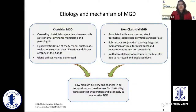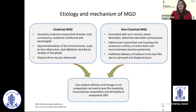Broadly, MGD could be classified into cicatricial and non-cicatricial. The causes of cicatricial MGD include trachoma, erythema multiforme, pemphigoid, and Stevens-Johnson syndrome. The basic pathology is hyperkeratinization of the terminal ducts, which leads to duct obstruction, duct dilatation, and disuse atrophy of the glands.